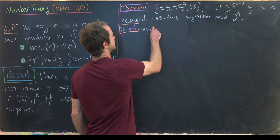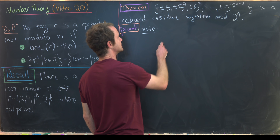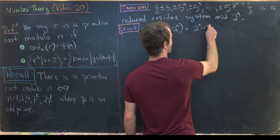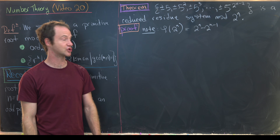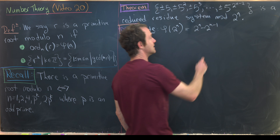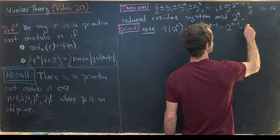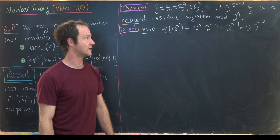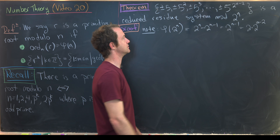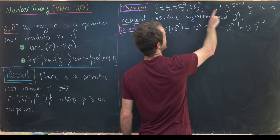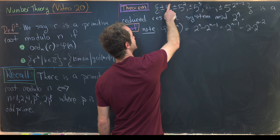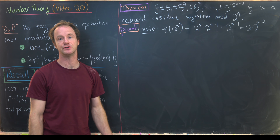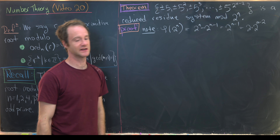First, this set has the correct number of elements. We compute φ(2^n) = 2^n − 2^(n−1) = 2^(n−1) = 2·2^(n−2). The list ±5^1, ±5^2, …, ±5^(2^(n−2)) has exponents 1 through 2^(n−2), each with two sign choices, giving 2·2^(n−2) elements total — matching φ(2^n).